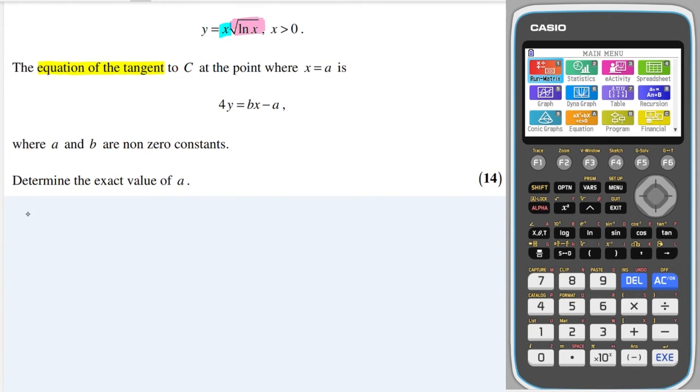So first off, I say that u is equal to x and v is equal to (ln x) to the power of a half, which is the same as square root of ln x. I differentiate each part. So the derivative of u, in this case, with respect to x, would just be 1.